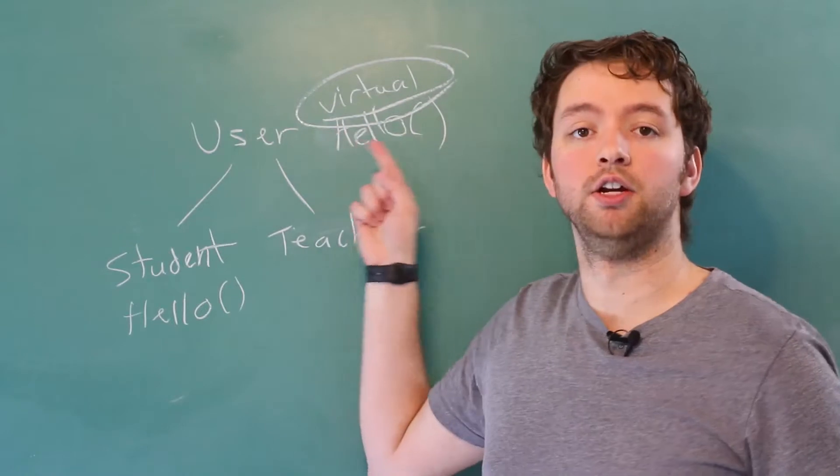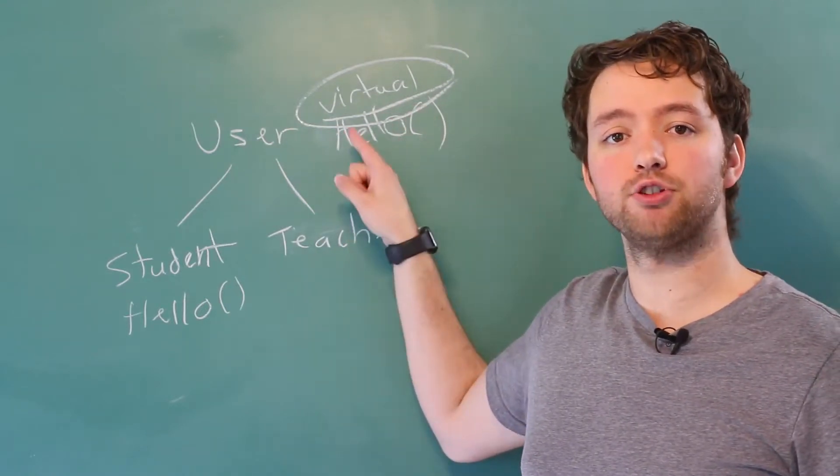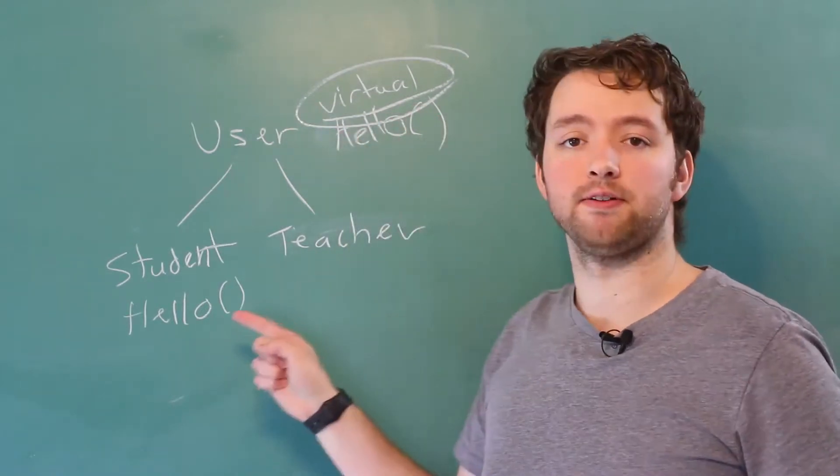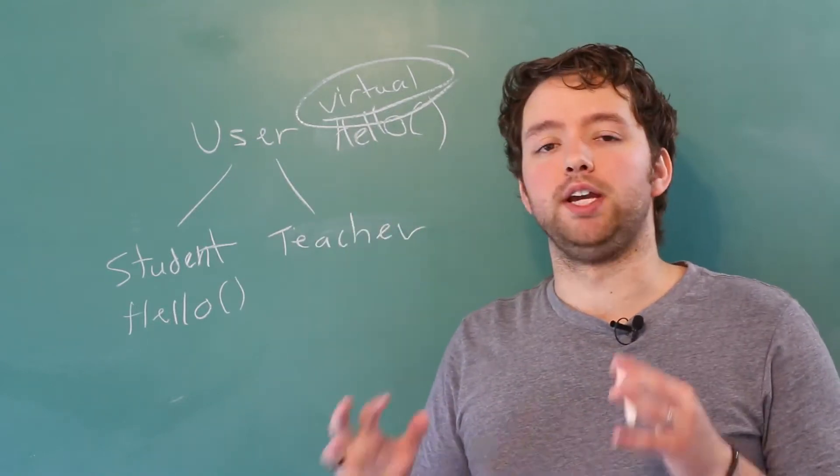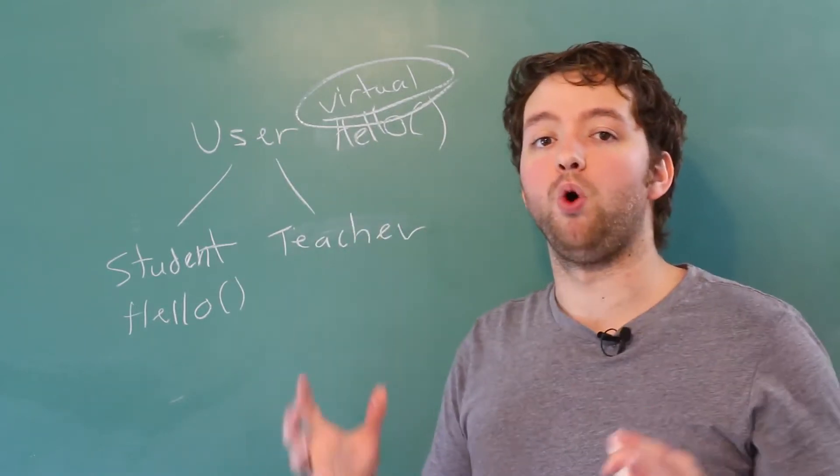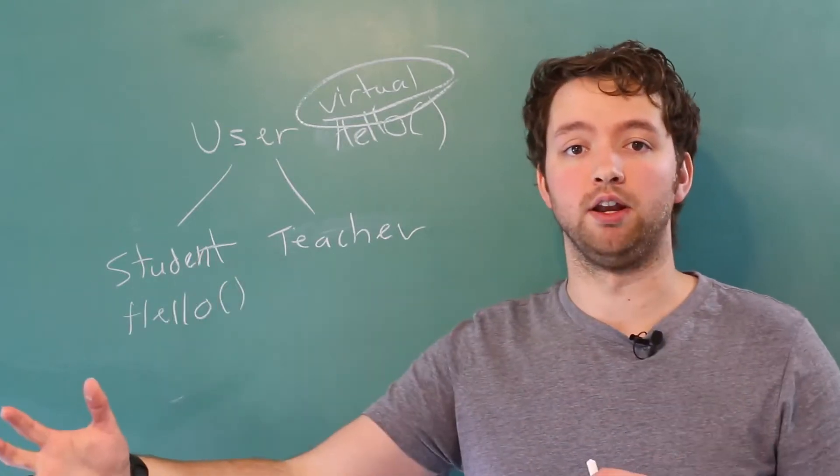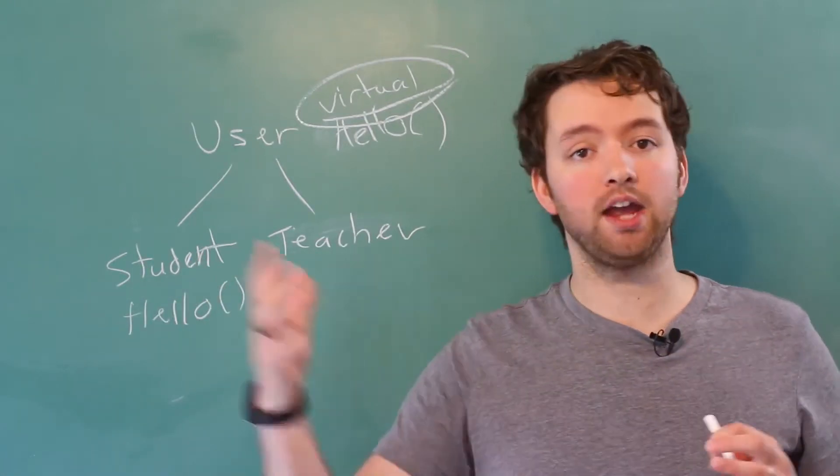So that's the key thing here. When we label a method as virtual, any of the derived classes can override that method. When you see virtual, it doesn't necessarily mean it's always going to be overridden. It just means that it can be overridden.